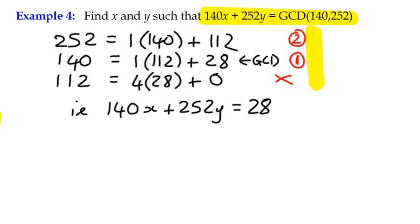which is 140 equals 1 times 112 plus 28. And we're going to rearrange that so that we start with the remainder. So we're going to rearrange that: 28 is equal to 140, subtract 1 lot of 112. Okay, so far so good. And what we're going to do is keep substituting until we've only got the two numbers, 140 and 252 in here. We've got the 28, we want to keep that, but we don't want the 112.